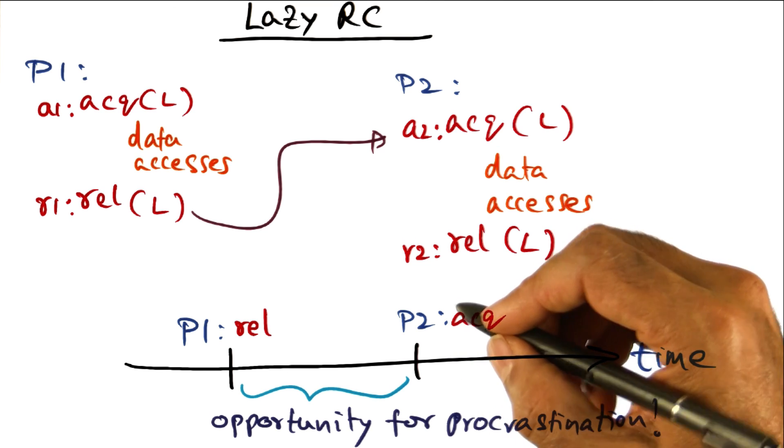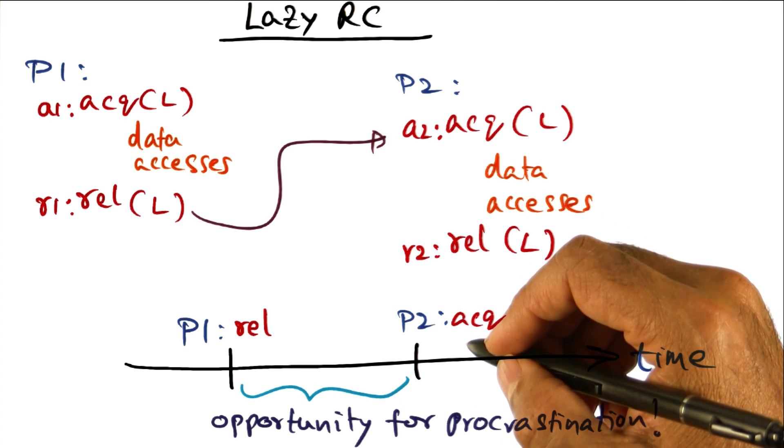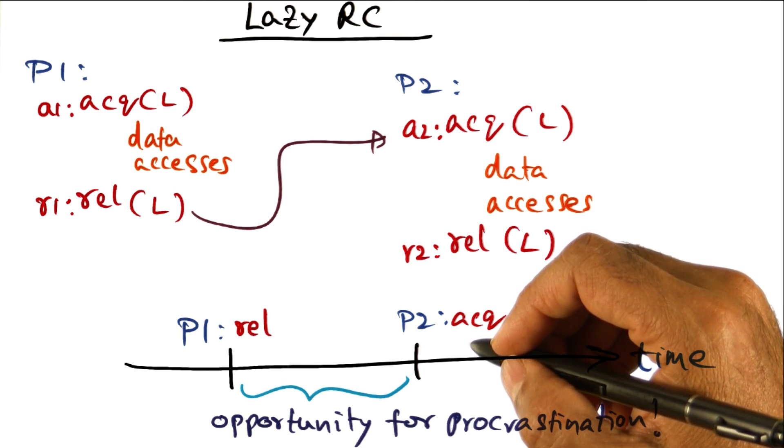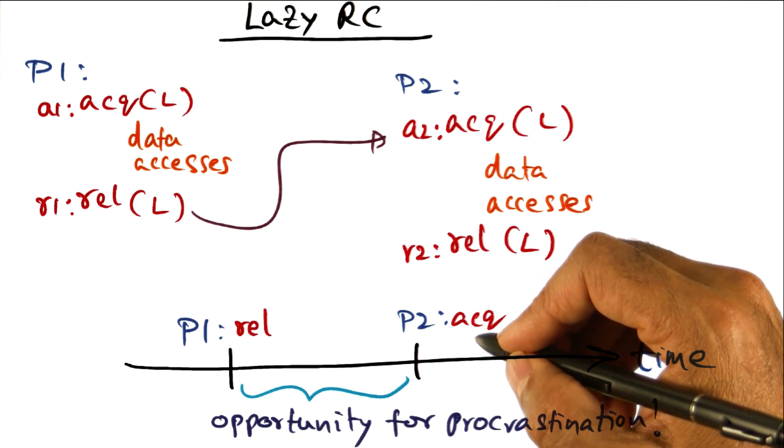We saw that in processor scheduling too. Instead of eagerly scheduling the next available task, maybe you want to wait for a task that has more affinity to your processor. That results in performance advantage. So procrastination often is a good friend of system design.